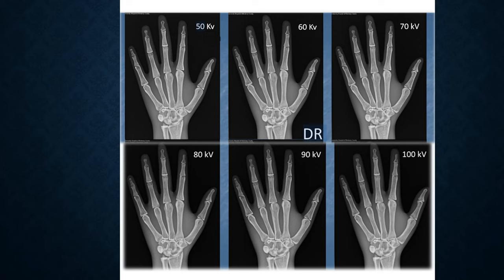Looking at these six images, this is using the 15% rule — increasing KV by 10 each time and halving the mAs accordingly. Looking at images from 50 KV to 100 KV, there is a slight difference but not a very big noticeable difference. This is why it's important to always look at your index numbers.